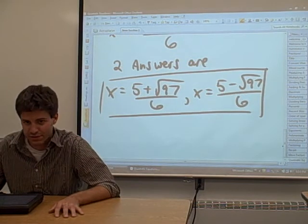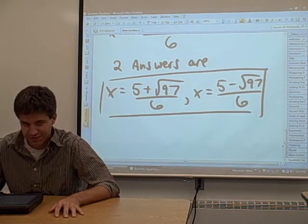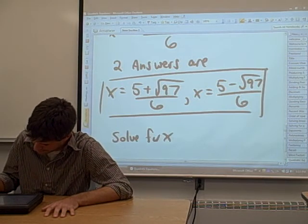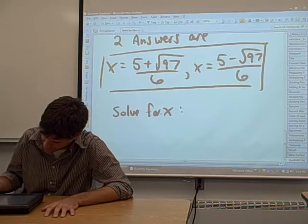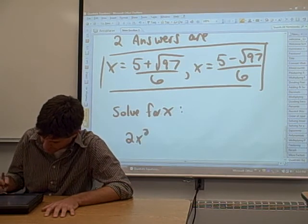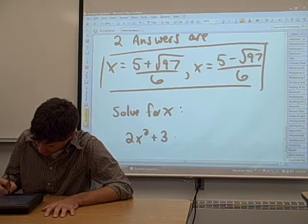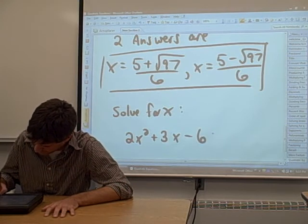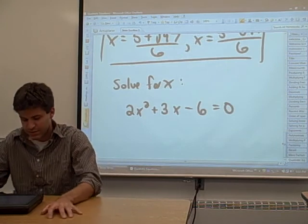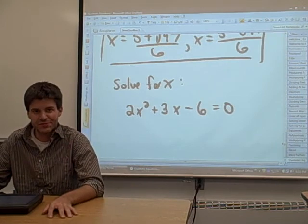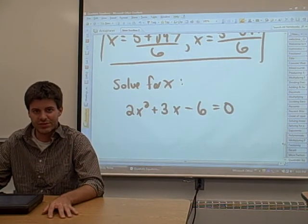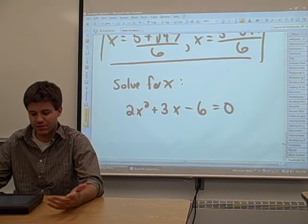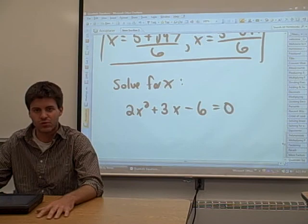Why don't you try one of these on your own? Let's say we have the equation solve for x. We have the equation 2x squared plus 3x minus 6 equals 0. You want to solve that equation for x. Again, it's a quadratic equation. Give it a shot if you feel like it. Hit pause on your video and come back, and we'll work on it together.